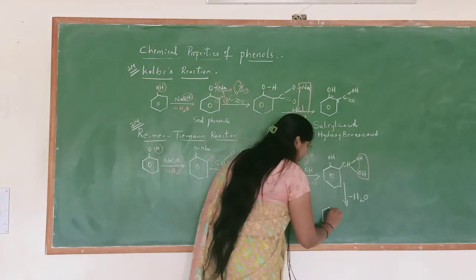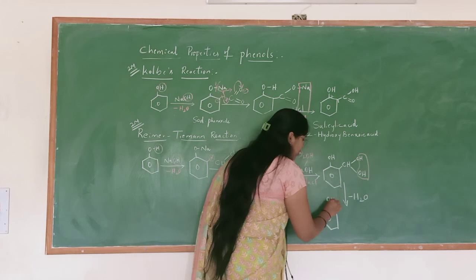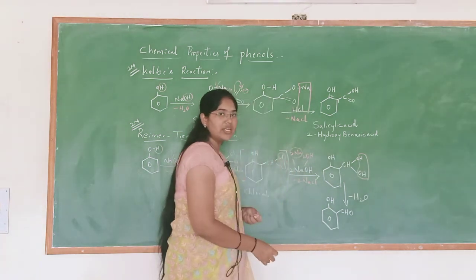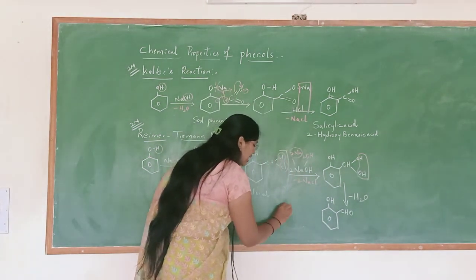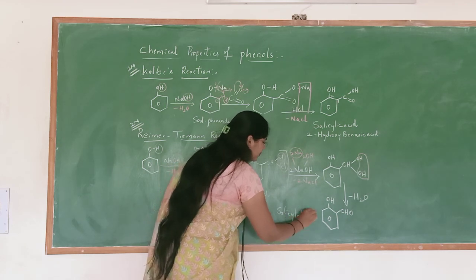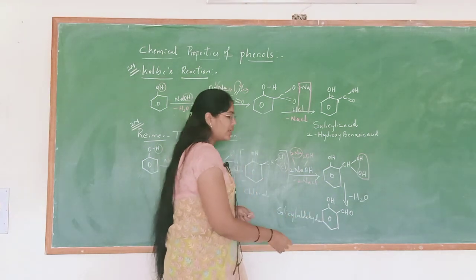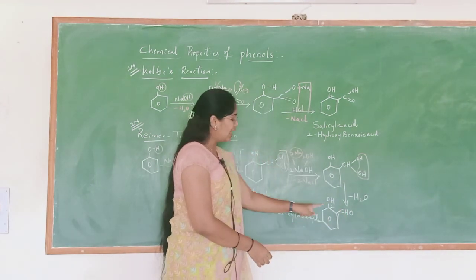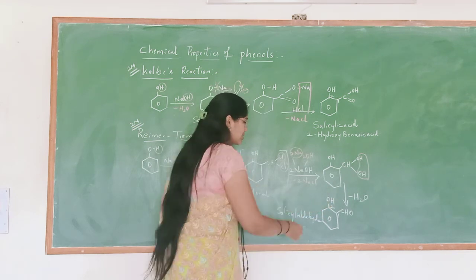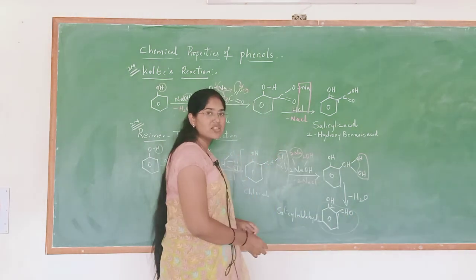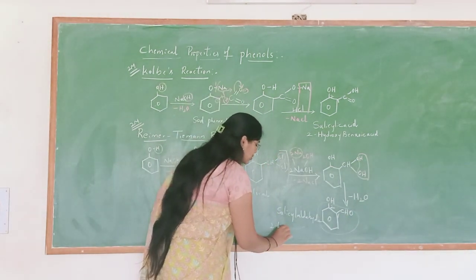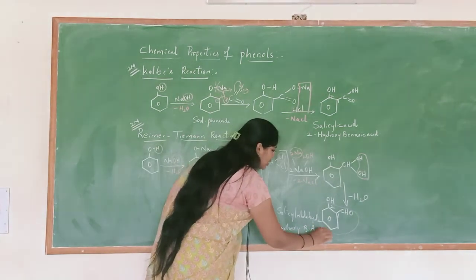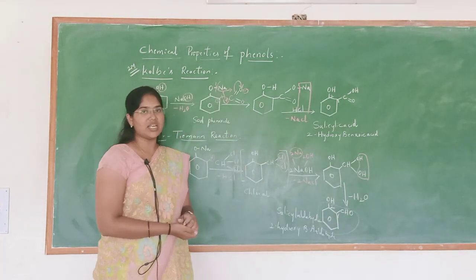That is nothing but an aldehyde functional group. This is C=O. After elimination of H2O, CHO is formed — that is known as an aldehyde. And the compound name is known as salicylaldehyde. Finally we got salicylaldehyde. Here the first number is given to the carboxyl group, and OH is at the second position, so it is 2-hydroxy. The total compound name is 2-hydroxybenzaldehyde.